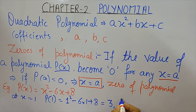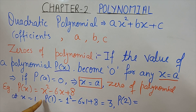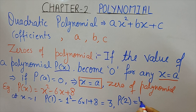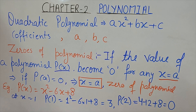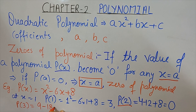Now calculate p(2) — the value of the polynomial at x = 2. We get 2² - 6×2 + 8 = 4 - 12 + 8 = 0. So at x = 2 we are getting value 0. Let us also calculate p(3): at x = 3 we get 9 - 18 + 8 = -1.